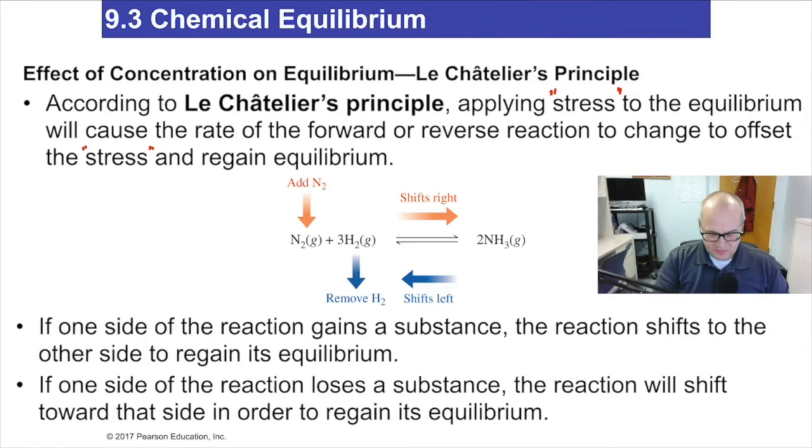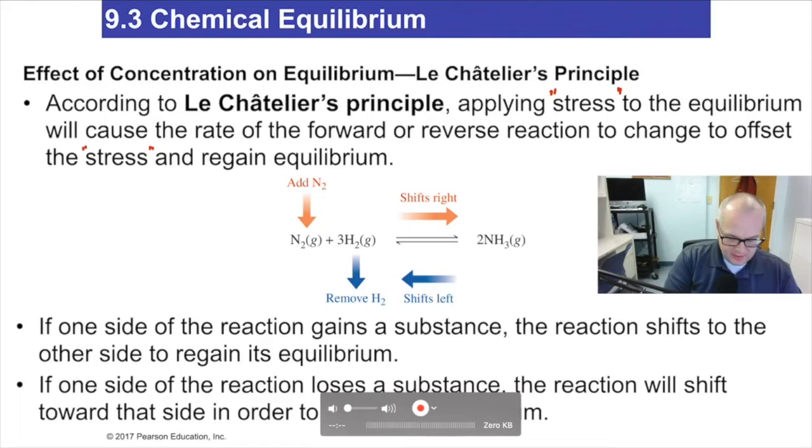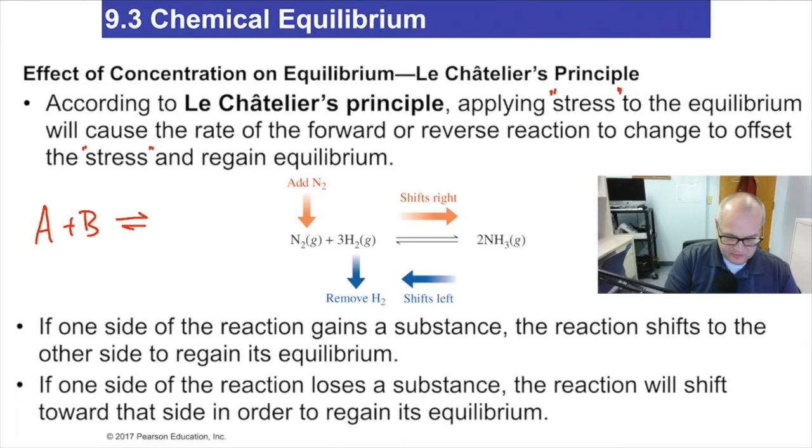Let's just take a very simple reaction. A plus B gives me C, and that reaction is reversible. A plus B is in equilibrium with C plus D. This reaction is in equilibrium. That means as fast as C and D are made, A and B are made. This reaction is going back and forth.